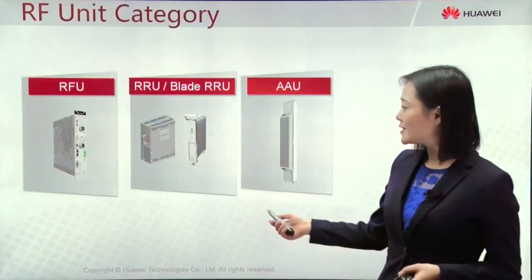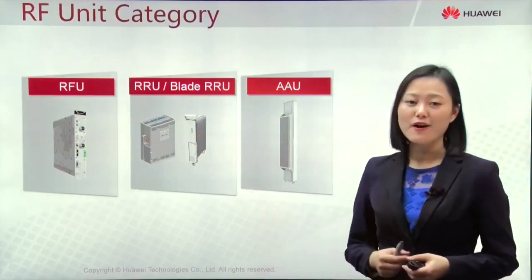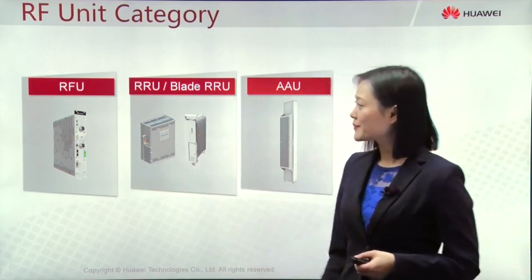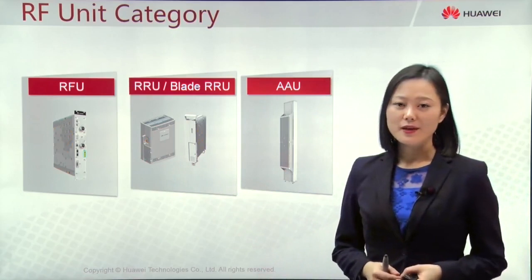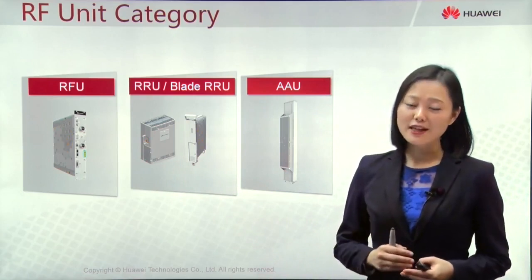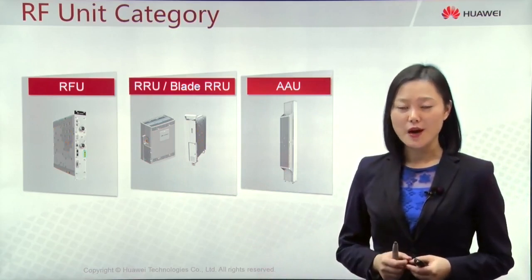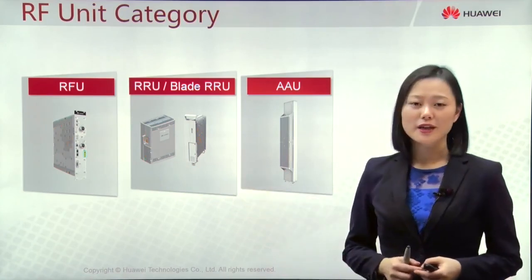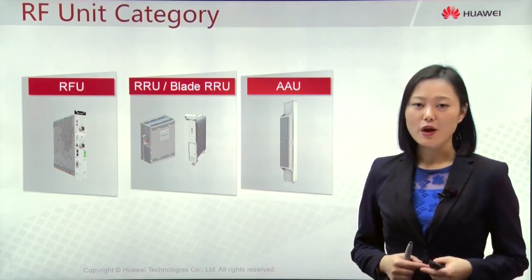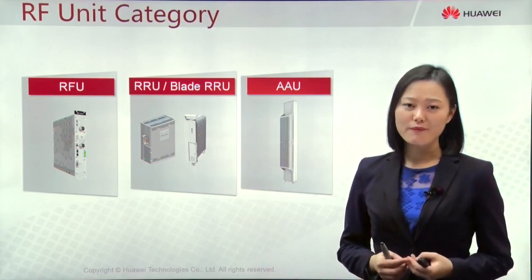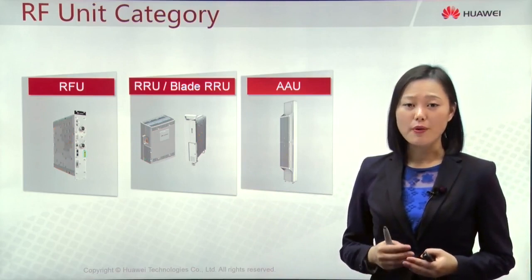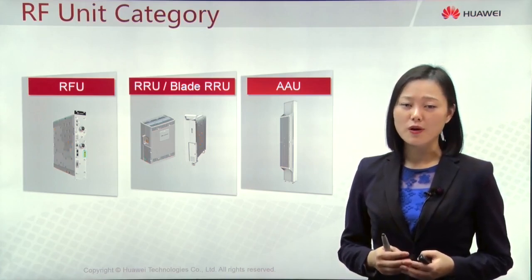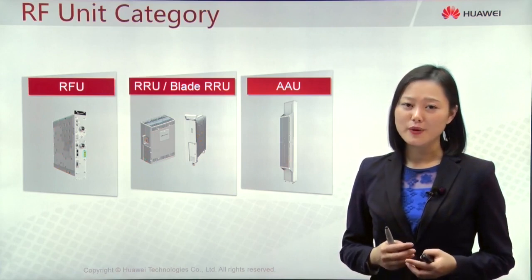This slide lists three types of RF unit. The first is RFU, the oldest version, which is normally installed inside a cabinet together with our BBU. The second is RRU, remote radio unit, normally installed far away from BBU. It can be on the pole, on the tower, on a rooftop, or on the wall, supporting flexible installation.